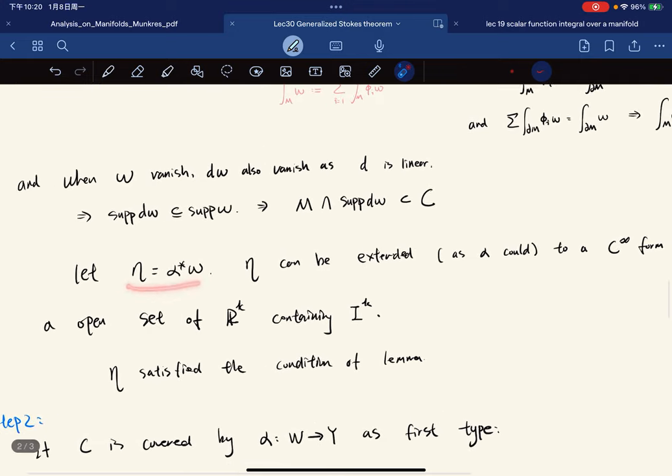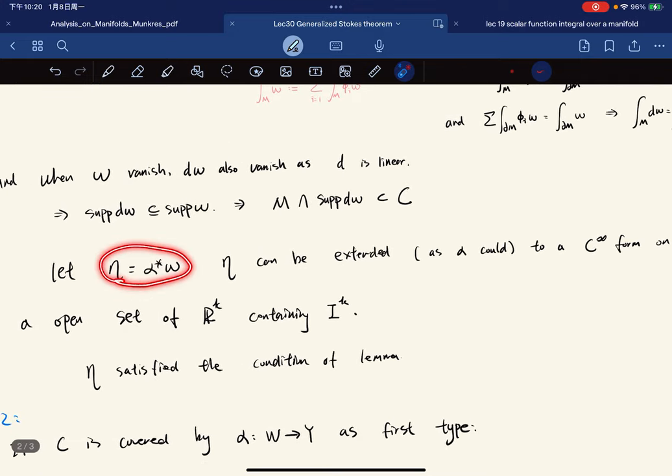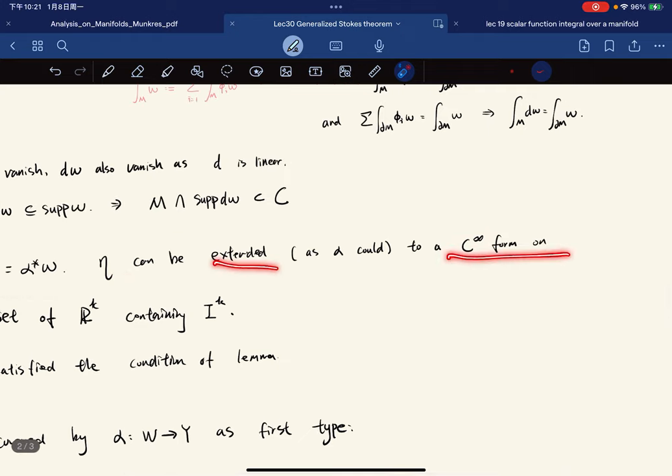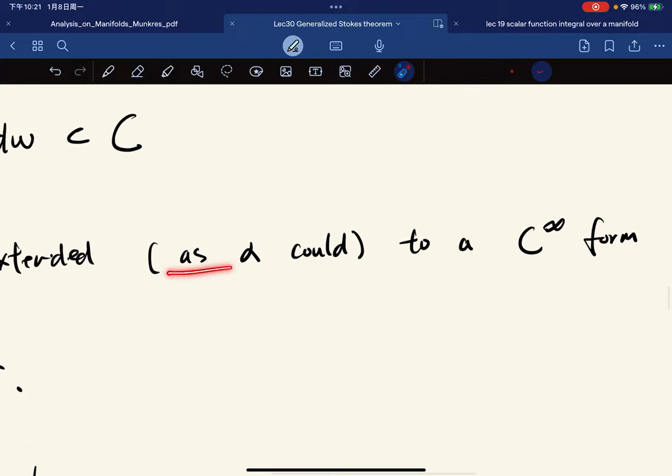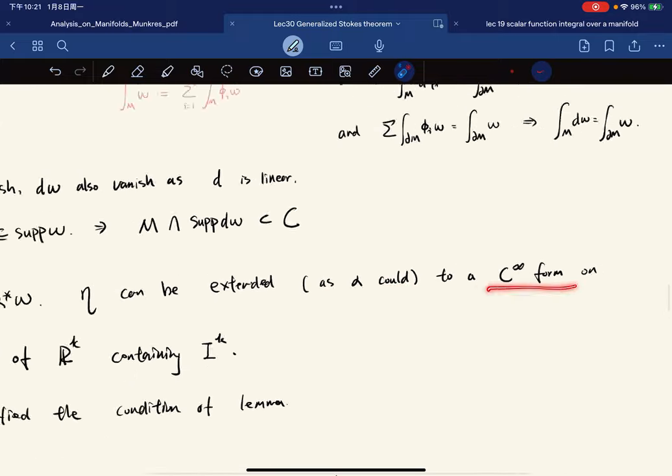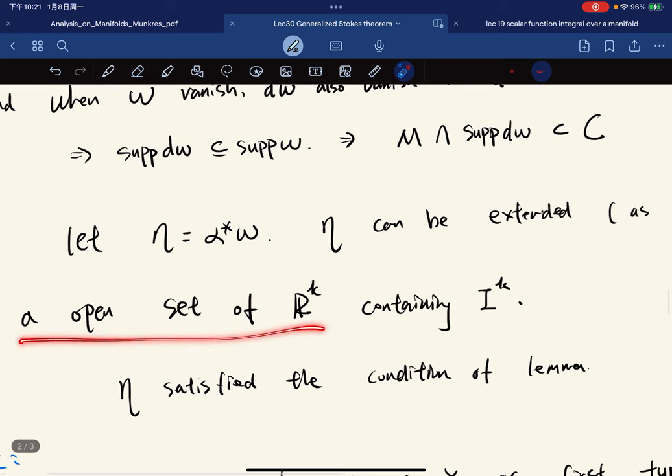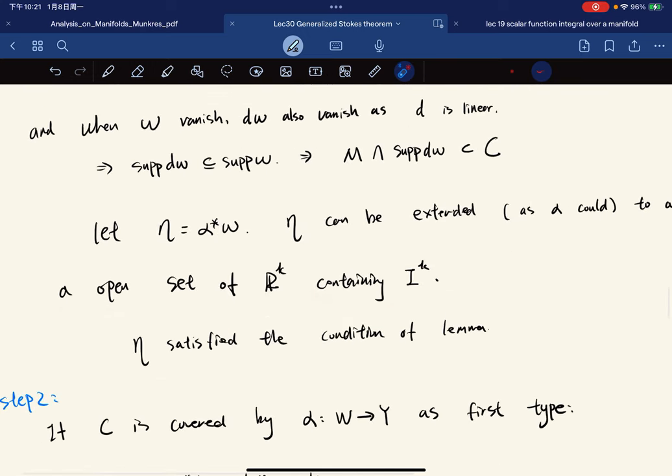Now, we let eta be this form. Because when we're calculating, and it goes over forms, we need to involve this. And eta can be extended to a C-infinity smooth form, because alpha star omega could be extended on a smooth form, on an open set of this containing I^k.